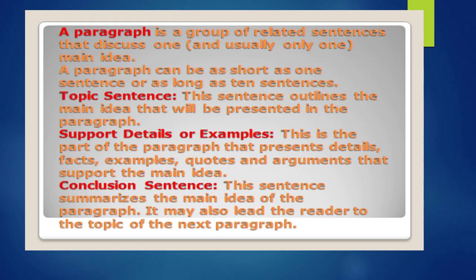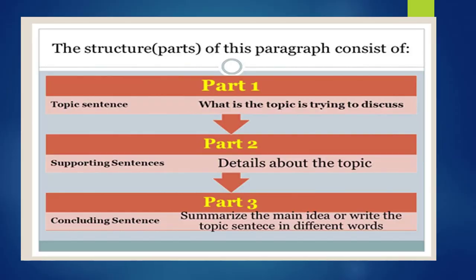It may also lead the reader to the topic of the next paragraph. There are many different types of paragraphs, depending on what you are writing. Descriptive paragraph: this paragraph describes something or someone. For example, you can write a descriptive paragraph describing your best friend, including what she likes and dislikes, where she lives, what she wants for her birthday, and her favorite food.